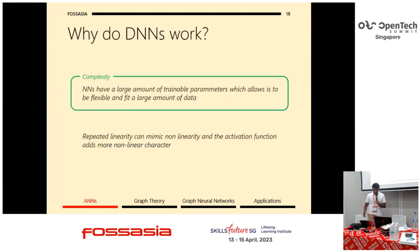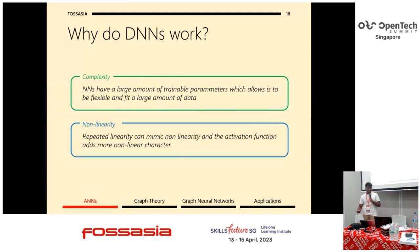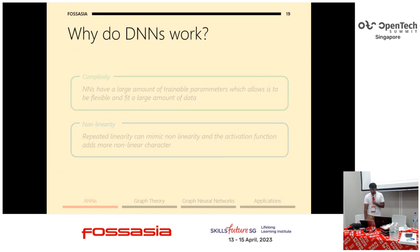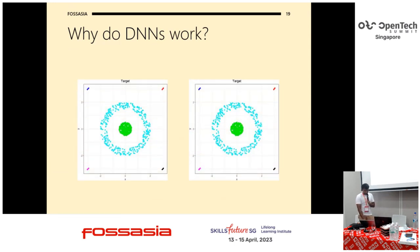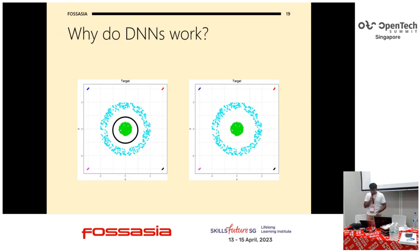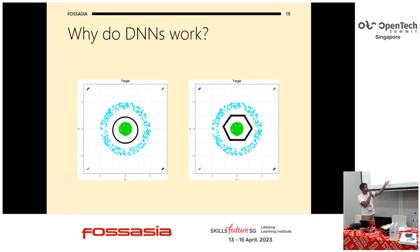The reason neural networks work is that they have a large number of trainable parameters, which allows them to be flexible. Repeated linearity can mimic nonlinearity, and activation functions add nonlinear character to the model. This is related to the universal approximation theorem. Here's an example: if I want to fit a circular nonlinear boundary, a neural network essentially adds multiple linear segments that together mimic the nonlinearity. By adding many lines, we can approximate the circle — even though it's not a perfect circle.